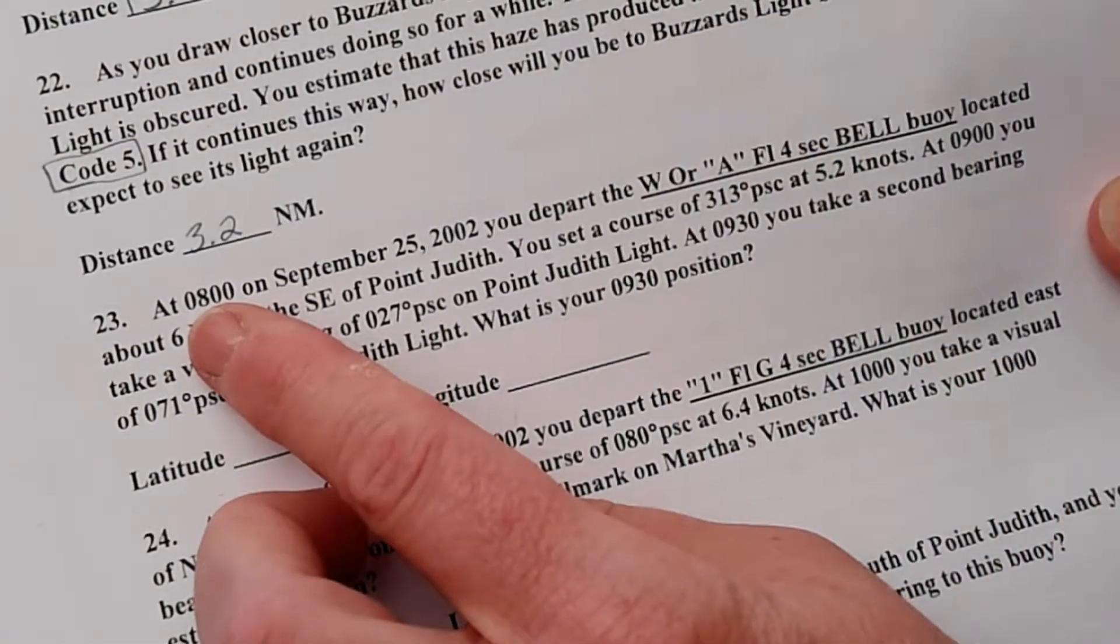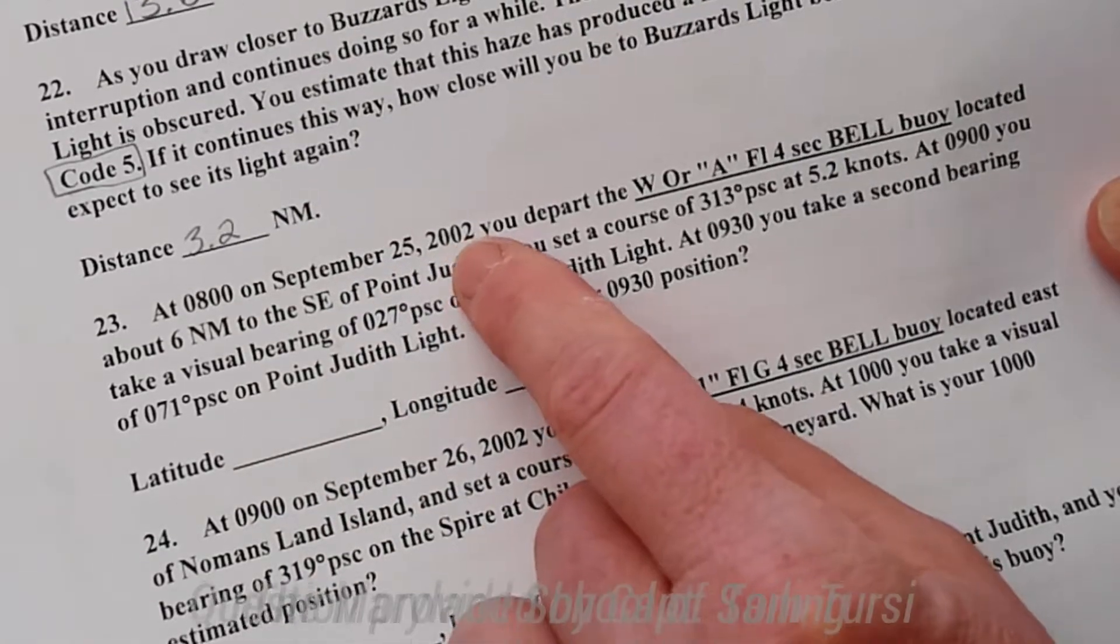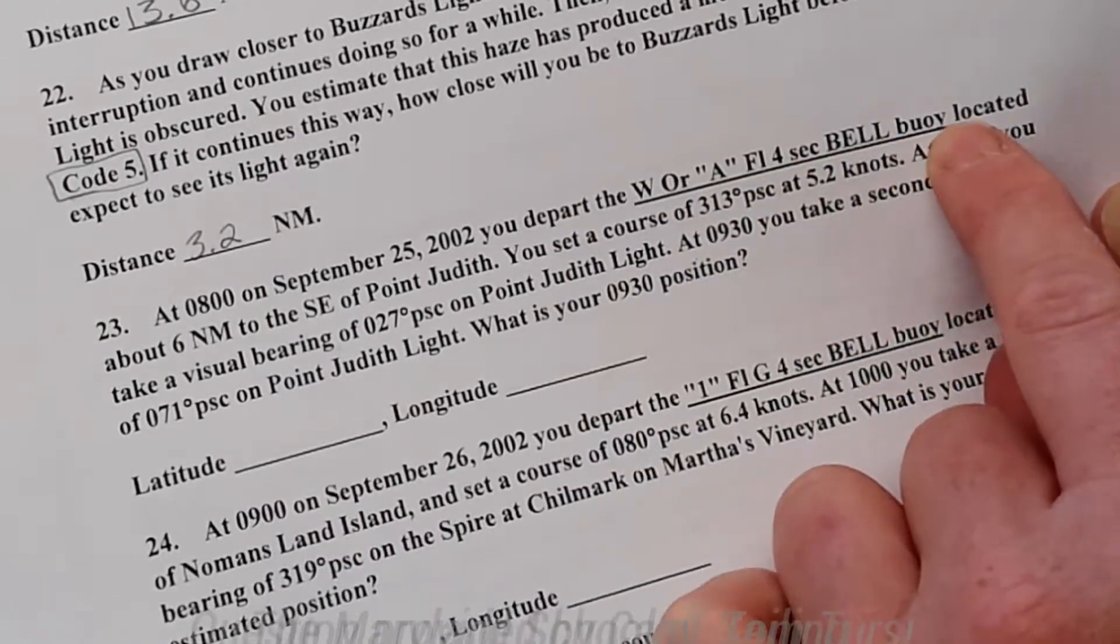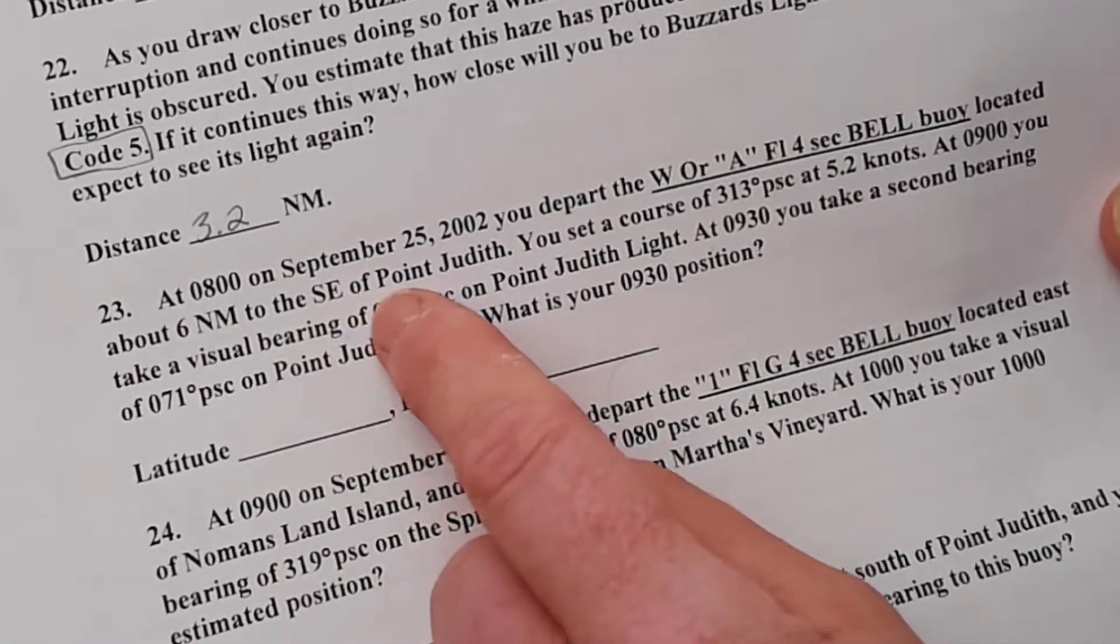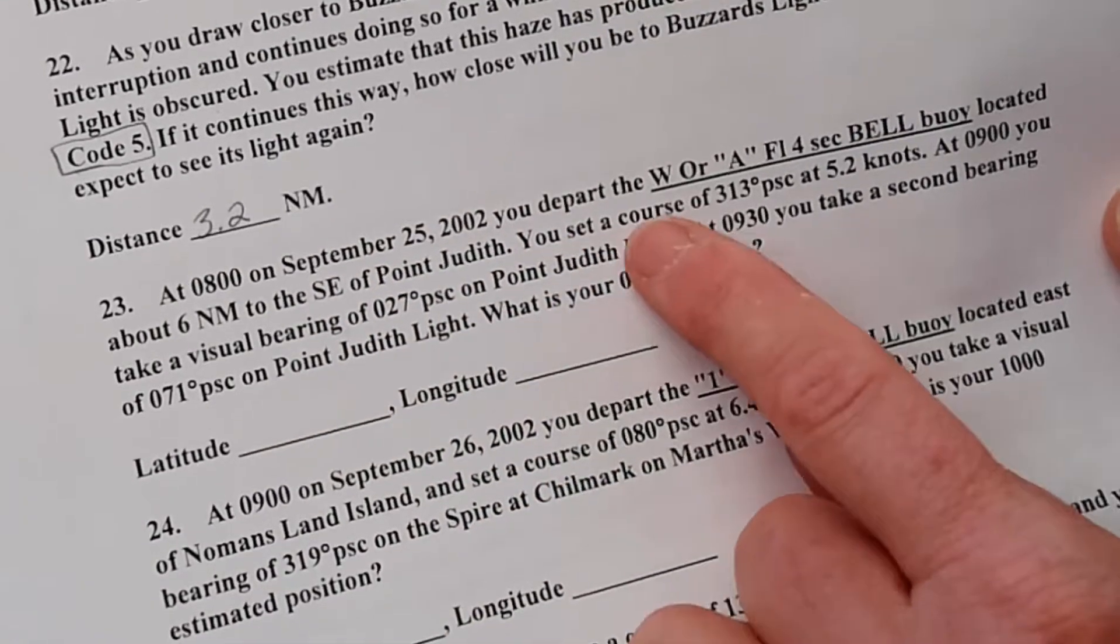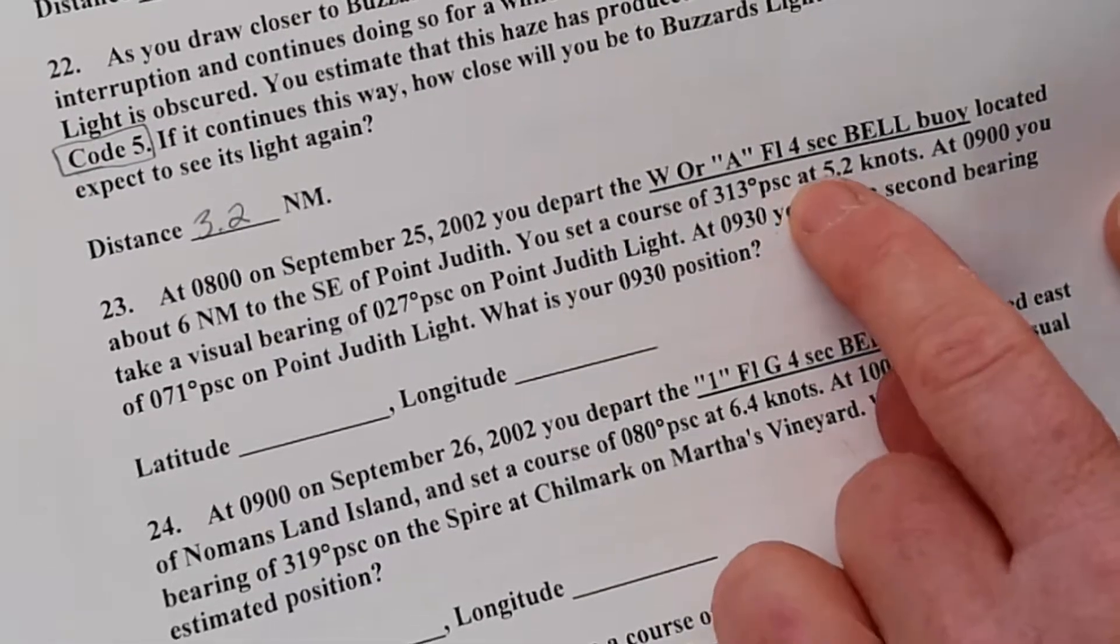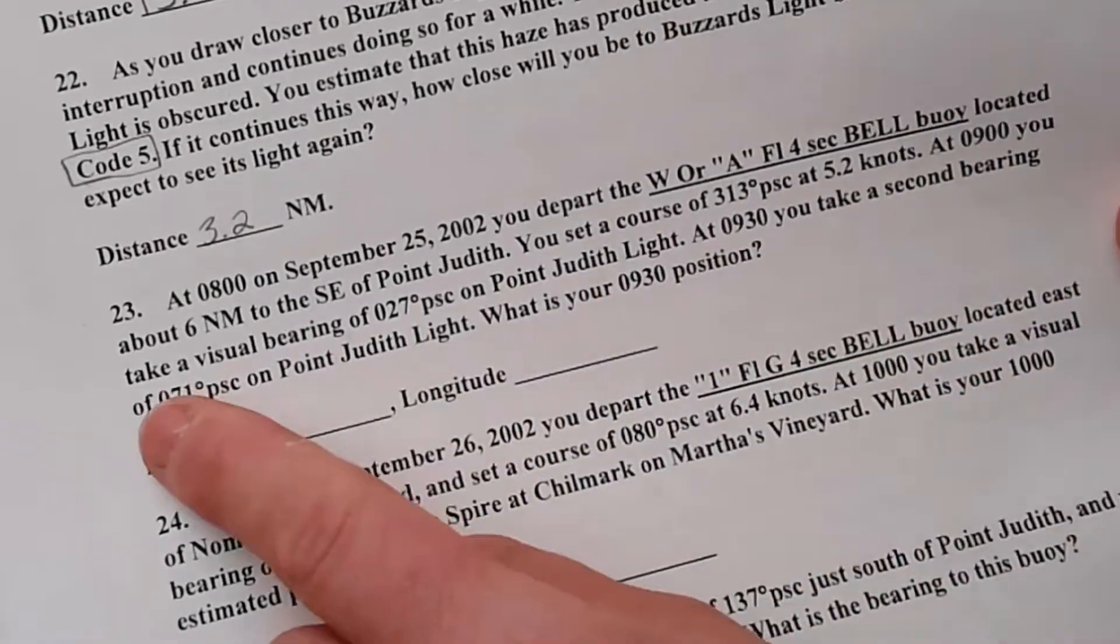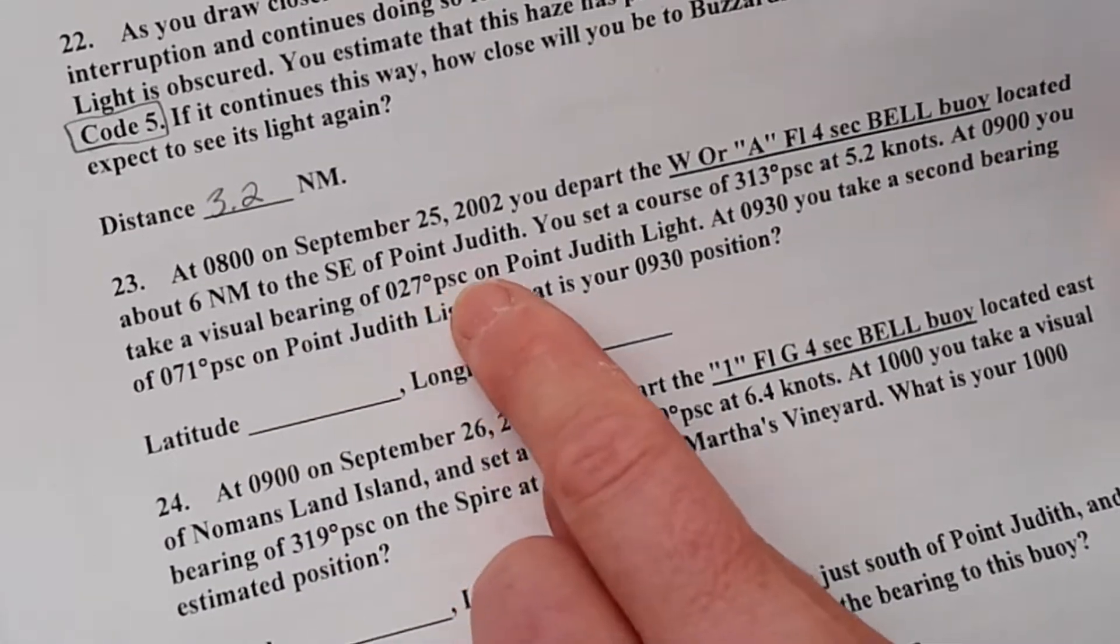Here we are at 0800 on September 25th, 2002. You depart the WRA flashing four-second bell buoy located about six nautical miles southeast of Point Judith. You set a course of 313 per ship's compass at 5.2 knots.